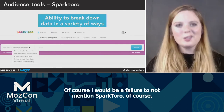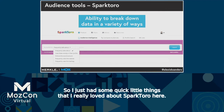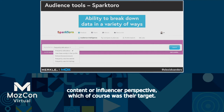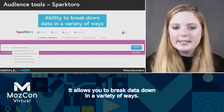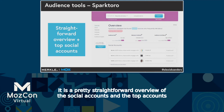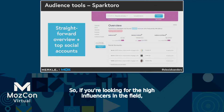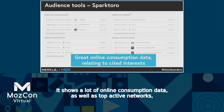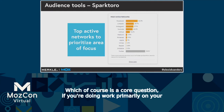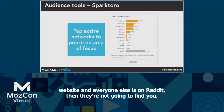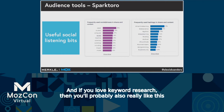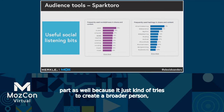I would be remiss not to mention SparkToro, which I'm sure many of you have already seen. I think it's really useful if you're approaching audience insights from a content or influencer perspective. It allows you to break data down in a variety of ways. It's a pretty straightforward overview of social accounts and the top accounts out there — so if you're looking for high influencers in the field, you'll be able to find those. It shows a lot of online consumption data as well as top active networks — so where's your audience actually engaging online, which is a core question. It also includes some useful social listening tidbits.